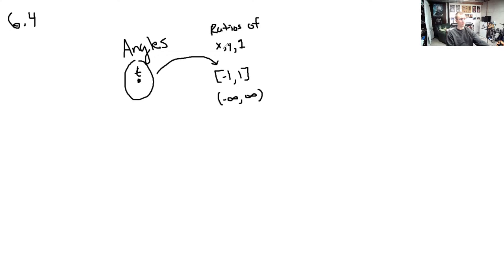And then the reciprocal functions — cosecant, secant, and cotangent — they take you from an angle to a ratio as well. Cosecant, which is the reciprocal of sine, takes you to the ratio of 1 over y. Secant, the reciprocal of cosine, takes you to the ratio of 1 over x. And cotangent takes you to x over y. So we can think of these trig functions from 5.5 as taking us from an angle to a ratio.